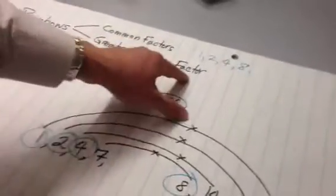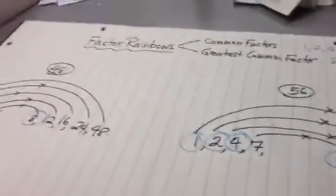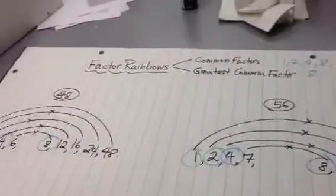The greatest common factor, or the largest factor that they share, is 8. And that's how we do factor rainbows in order to determine common factors and GCF, greatest common factor. Thank you for watching.